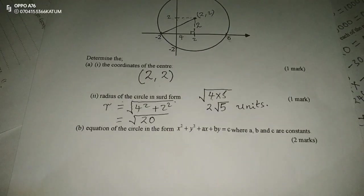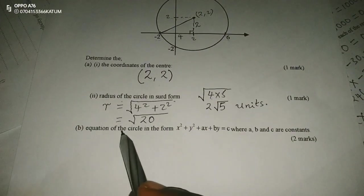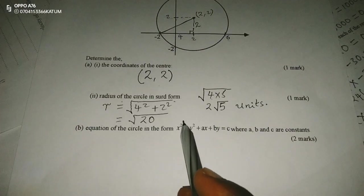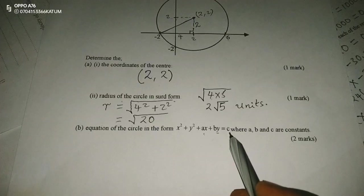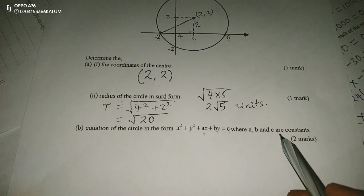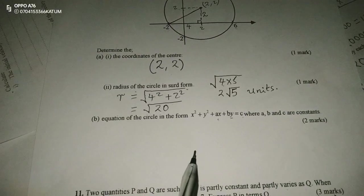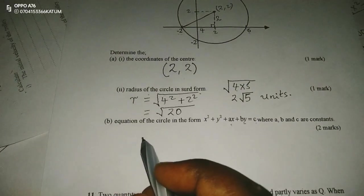That is the radius of the circle. Finally, equation of the circle in the form x² + y² + ax + by = c, where a, b, and c are constants.